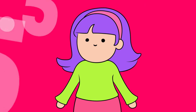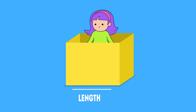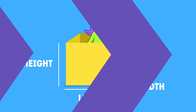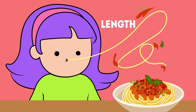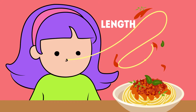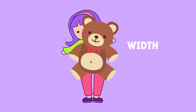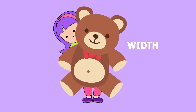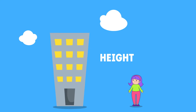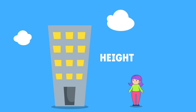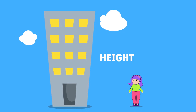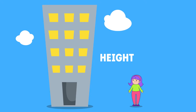We can measure an object's size by its length, width, and height. Length measures how long something is. Width measures how wide something is. Height measures how tall something is, starting from the top all the way to the bottom.